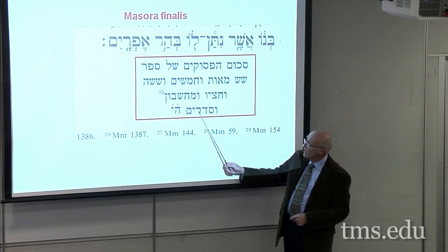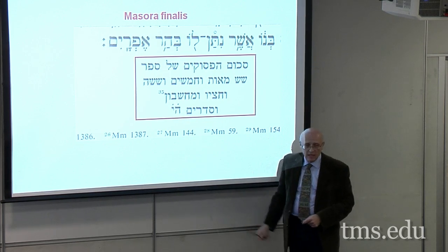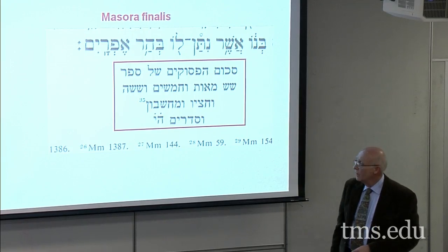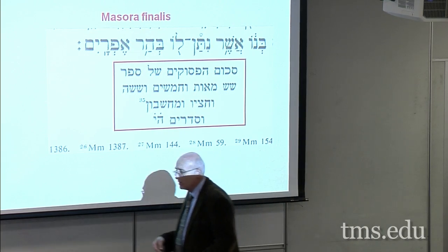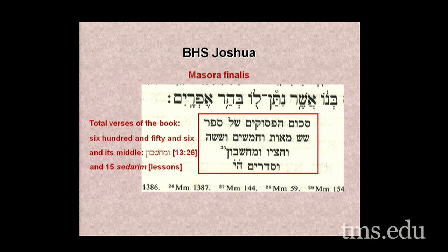With sederim it is 15. Why is 15 written as 5 and 10 instead of 10 and 5? So it doesn't look like Yahweh. In most Hebrew places, it is written instead with nine plus six — a tet and a vav — instead of using a hey and a yod. The seders are the individual weekly readings of the text, and there are 15 parts. So the total verses of the book: 656. And its middle is umecheshbon, in chapter 13 verse 26. And there are 15 sederim, or lessons, within the book. This is the Masora Finalis, found at the end of every one of the books of the Hebrew Bible.